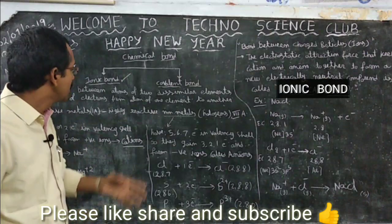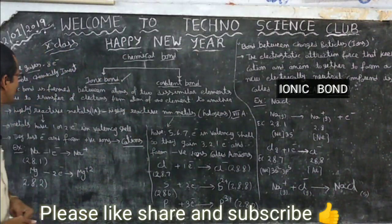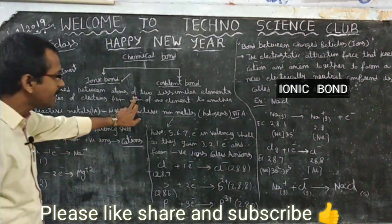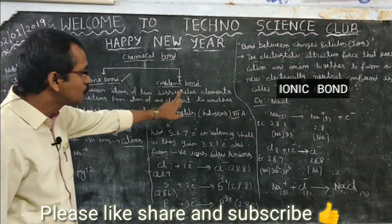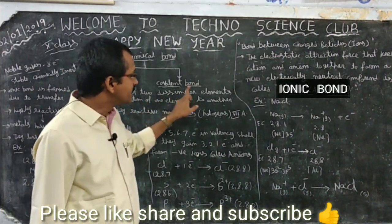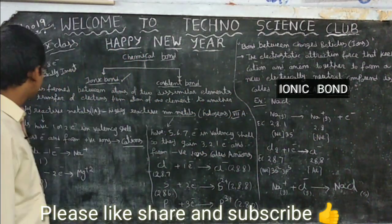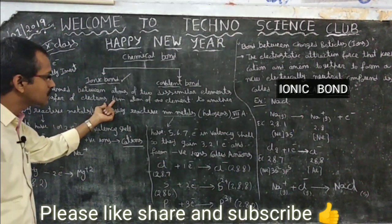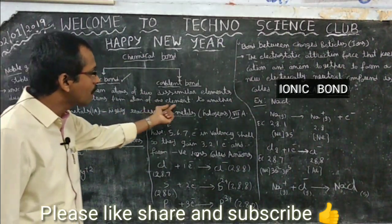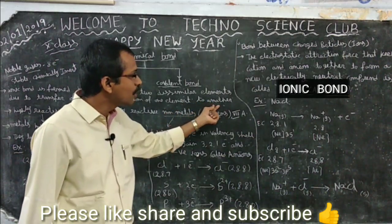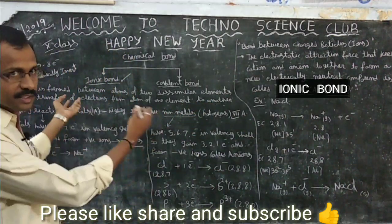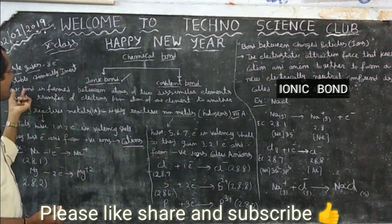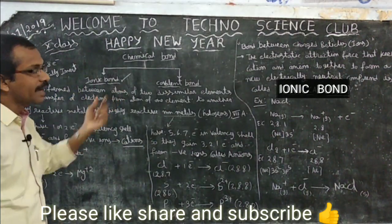An ionic bond is formed between the atoms of two dissimilar elements due to the transfer of electrons from an atom of one element to another. Let's learn this in detail.